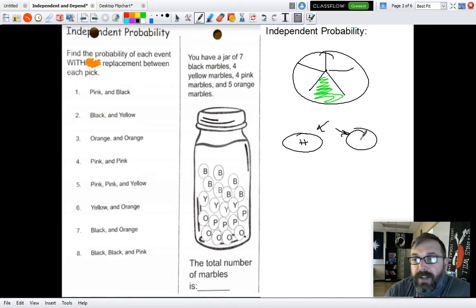Okay, so let's look at this jar of marbles. Now you can pause the video and count if you want, but I'll just tell you there are 20 marbles in here as a whole. So with independent probability, I want to know what the probability of pink and black is. So I'll look and I'll find my pink probability. So I have one, two, three. I have four pink.